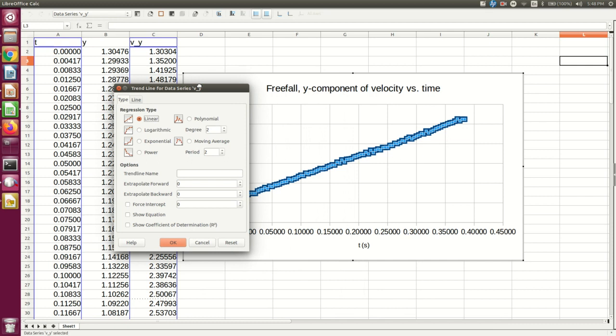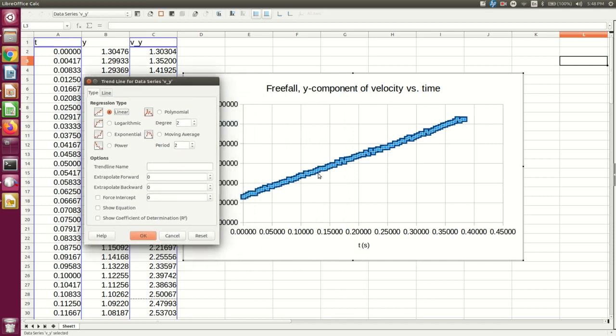And now you have to know what function should describe the data. Note that this one looks like a straight line and so linear is a good guess. But in general, you're not just guessing based on the shape. You have to know, based on the underlying physics, what function should describe it.